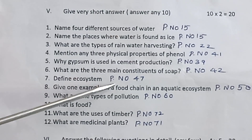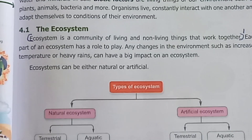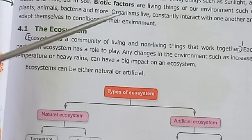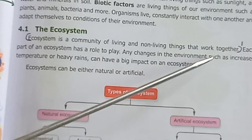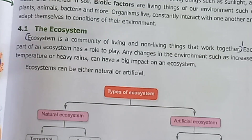Seventh one: Define ecosystem. Page number 47. Ecosystem — all living and non-living things in a given area that work together.